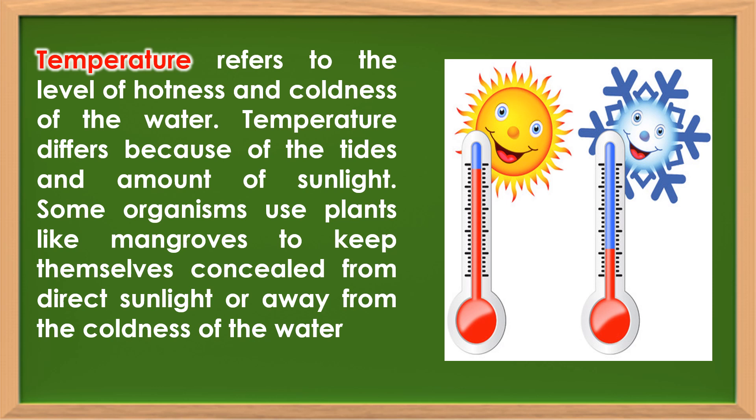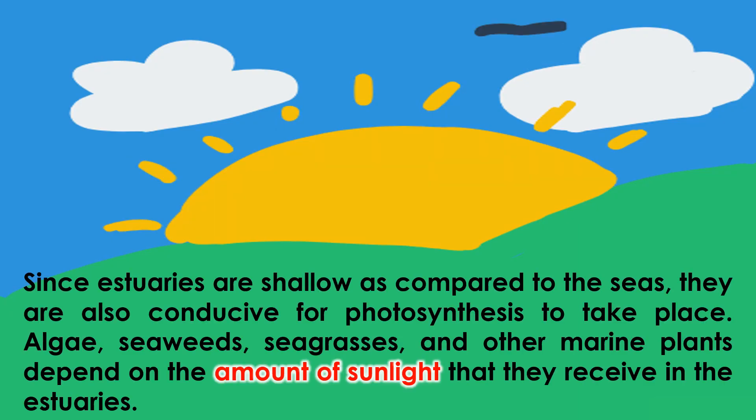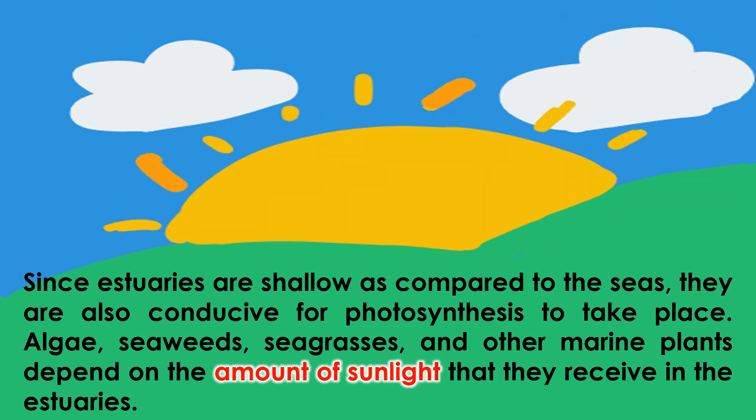Temperature refers to the level of hotness or coldness of the water. Temperature differs because of the tides and amount of sunlight. Some organisms use plants like mangroves to keep themselves concealed from direct sunlight or away from the coldness of the water. Since estuaries are shallow compared to the seas, they are also conducive for photosynthesis to take place.